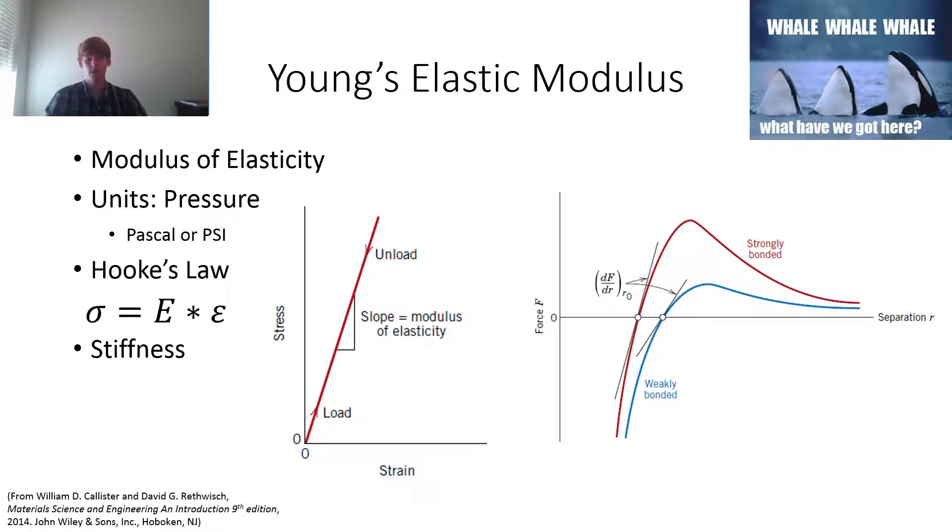And if a material is under low amounts of stress and strain, they're proportional, which gives us the definition of Hooke's law, where stress is equal to the modulus of elasticity multiplied by the strain. Young's elastic modulus is often referred to as stiffness.